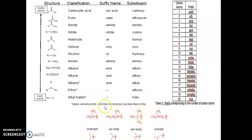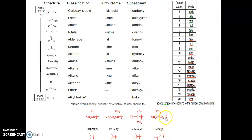Isopropyl can be written as CH3–CH(–)–CH3. Secondary butyl can also be written in its structural form. Tertiary butyl is a carbon bearing three methyl groups. Isobutyl is CH3–CH(CH3)–CH2–. These are the different suffixes used for functional groups when acting as a main group versus a substituent.